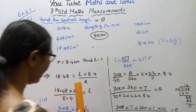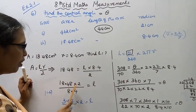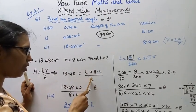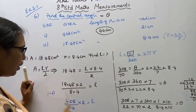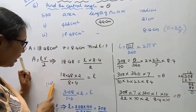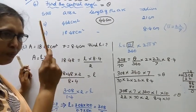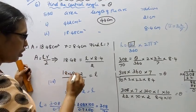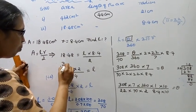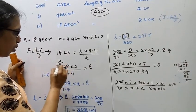So 18.48 into 2 divided by 8.4 equals L. After cancellation: six threes are 18, six eights are 48. So 1848 divided by 84 — after the cancellation, we get L.